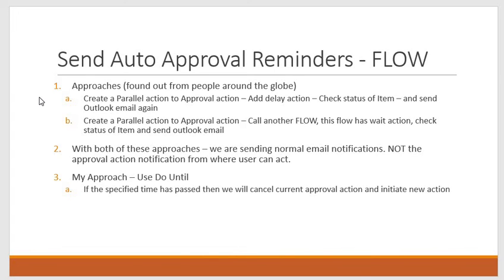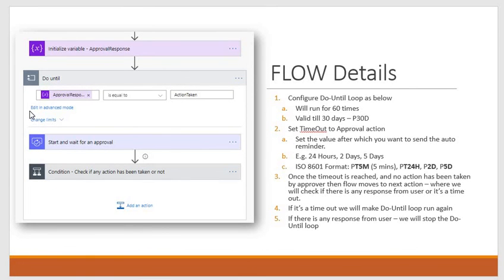To take action, the user needs the approval action notification. So I tried a different way using a Do Until loop, and that's the approach we are going to talk about in this video. With this Do Until loop we will be able to send the approval action notification again to the user. You need to decide after how many days to send the reminder and set some properties on your approval action as well as on the Do Until loop.